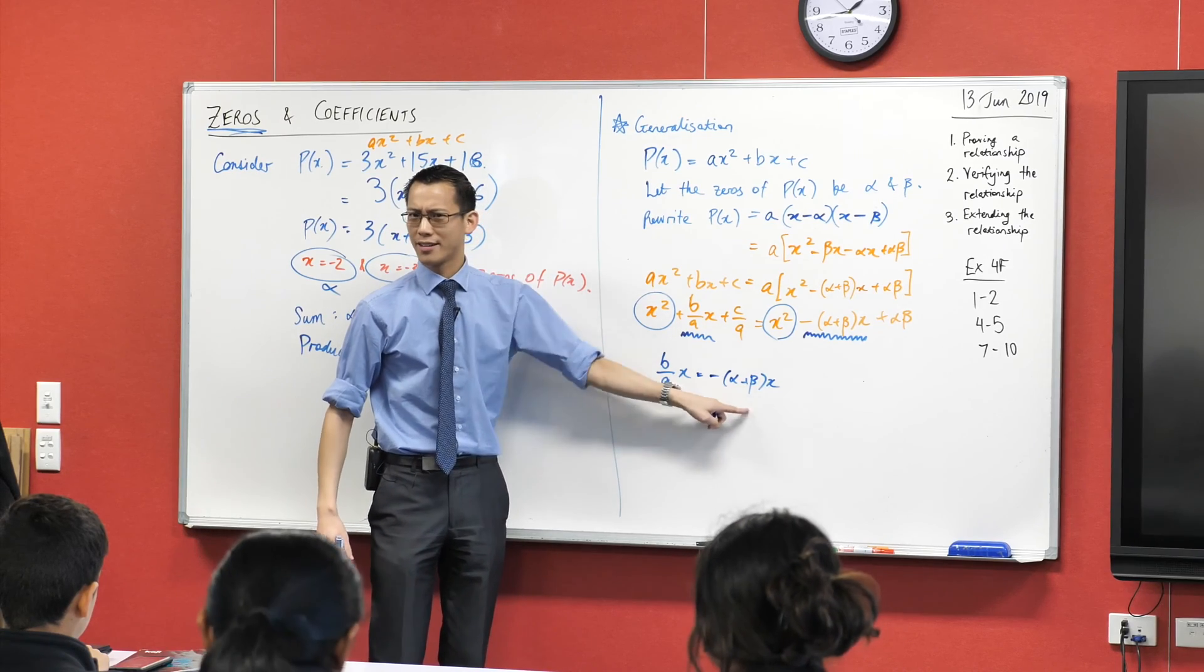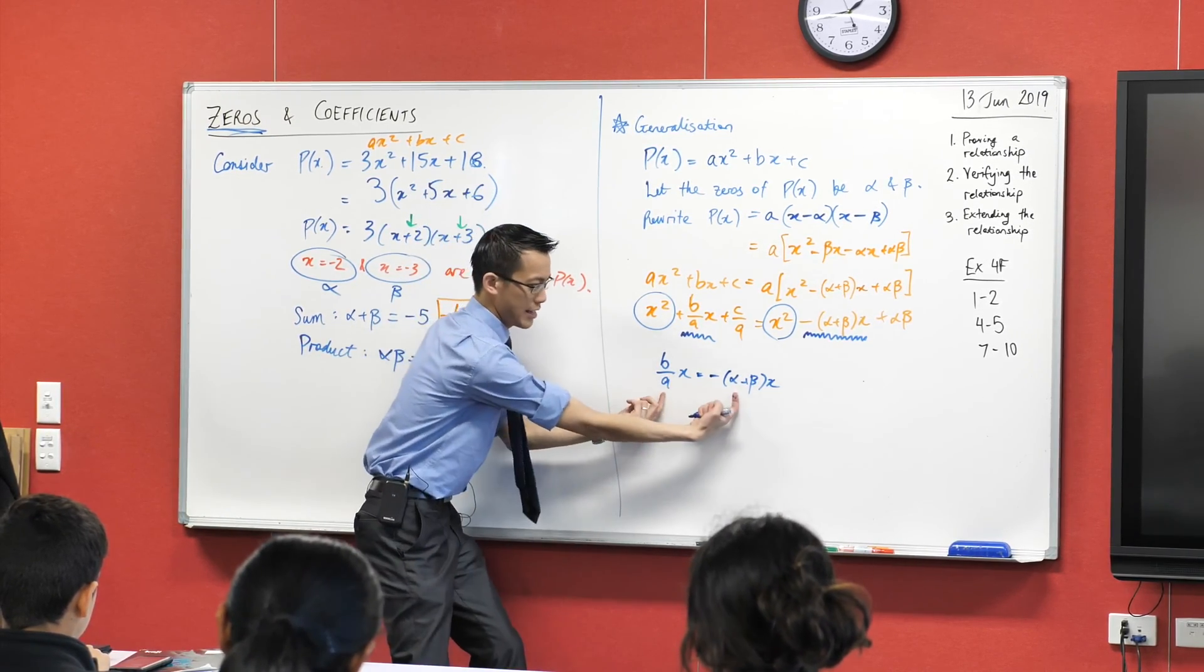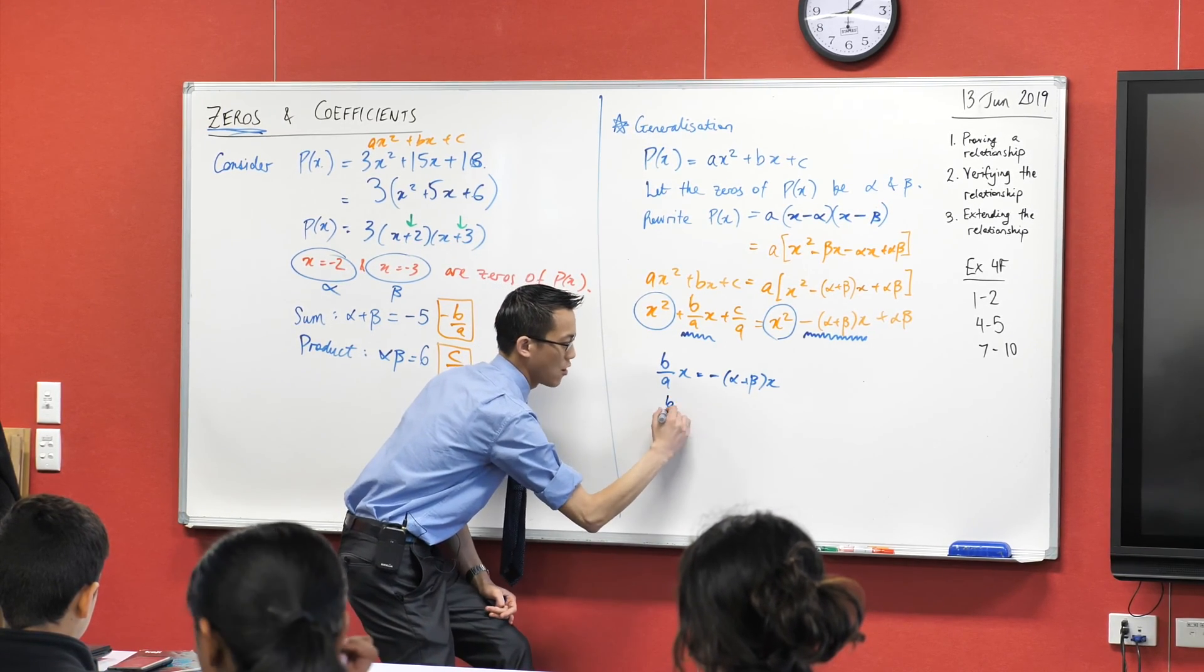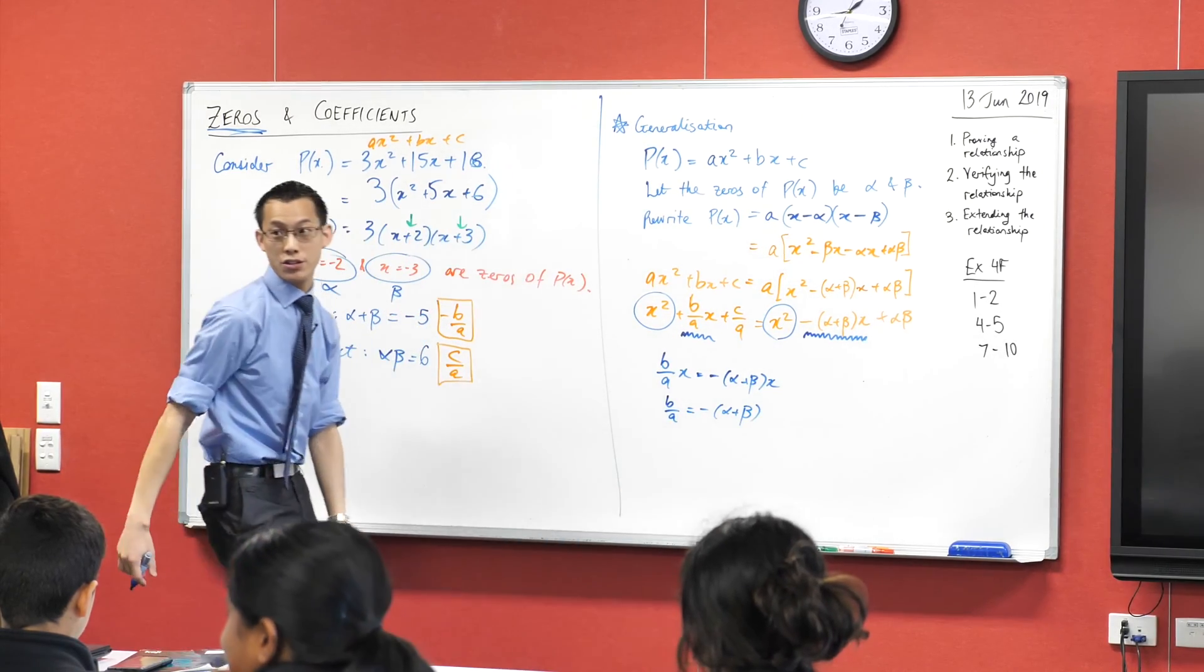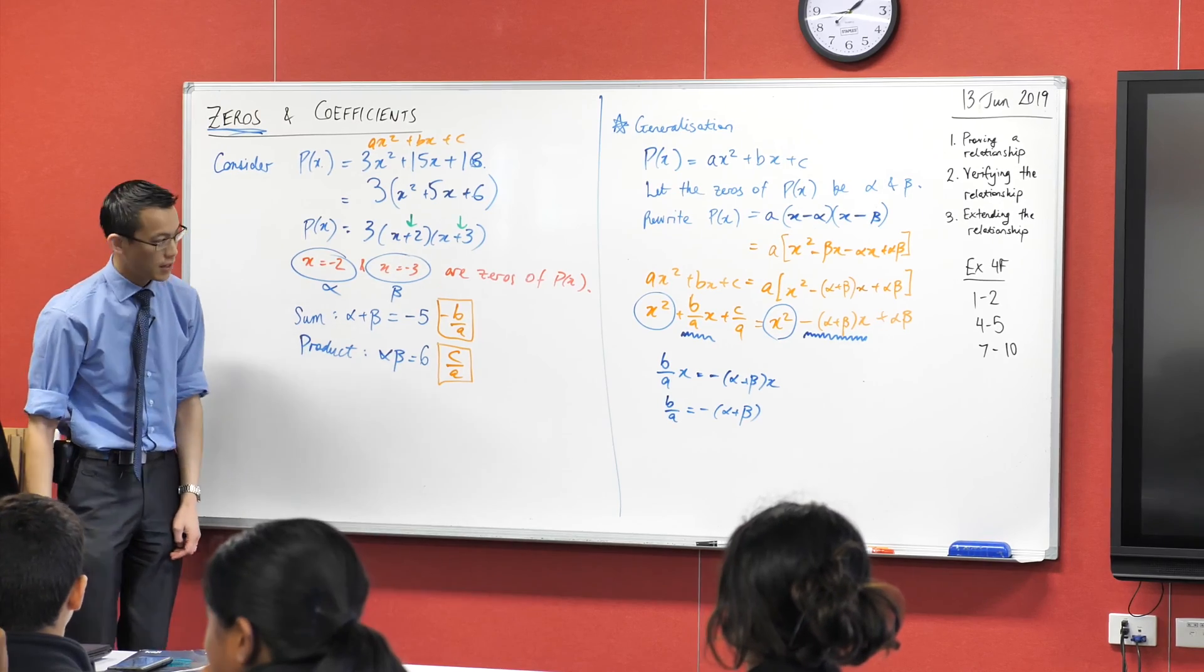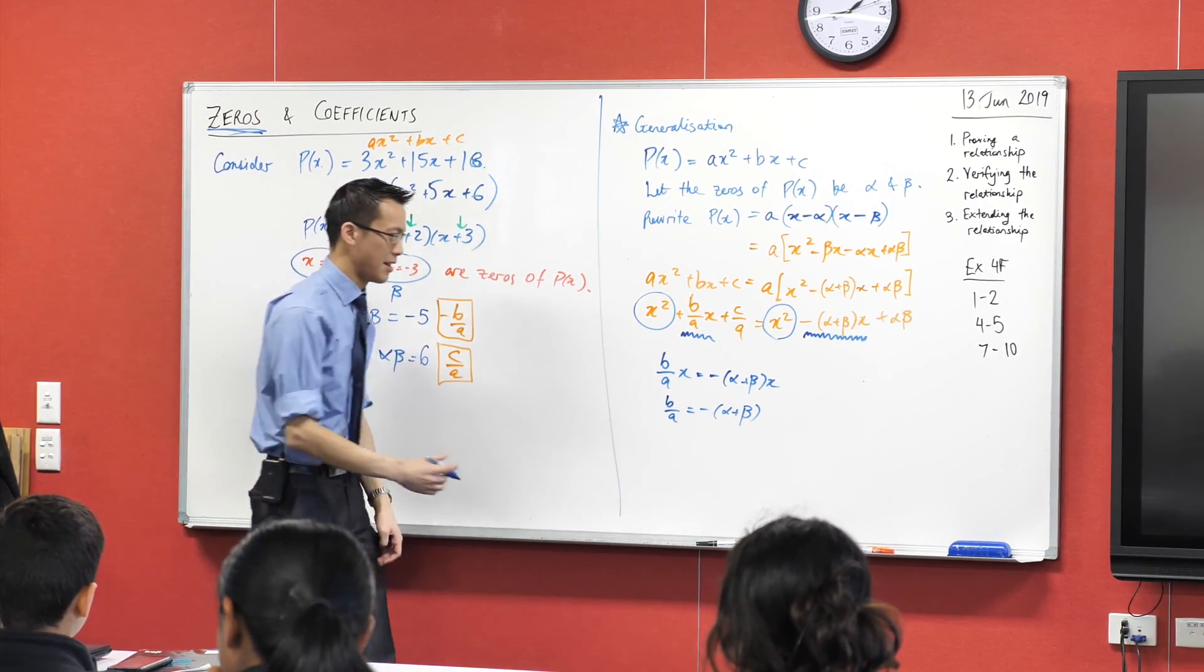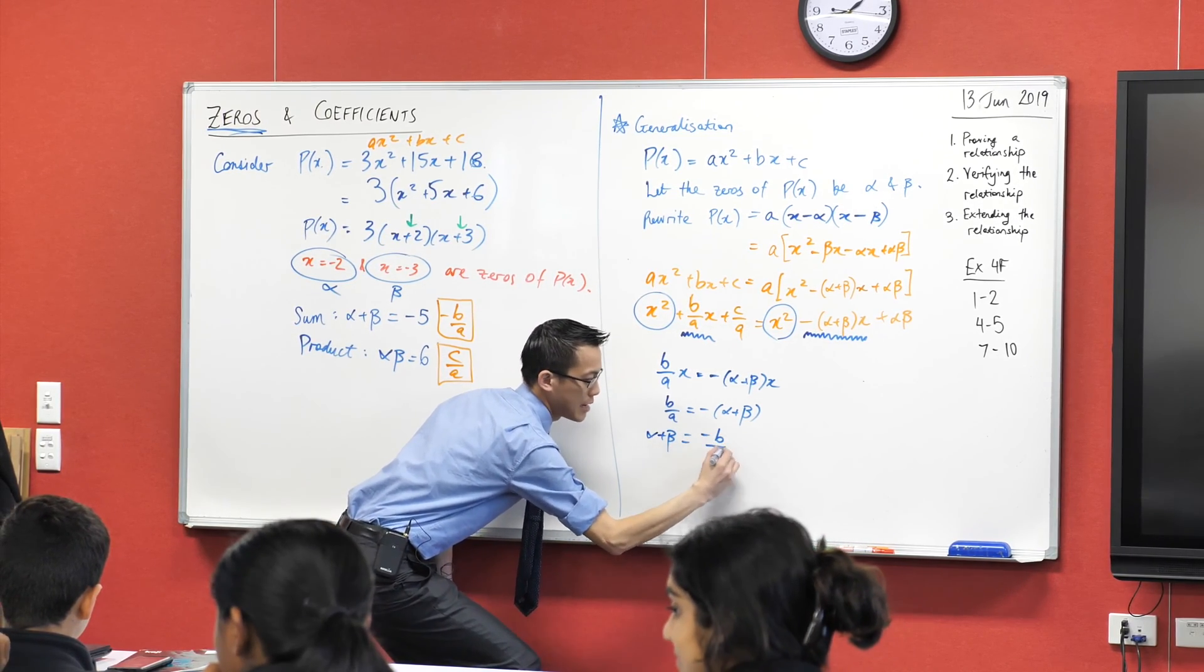We can simplify this a little bit, can't we? I don't need to write the x's there. It's really these two things that are really interesting, right? So I'm going to write b on a equals this. What's the last step I should do to get to my actual result that I wanted? Divide through by negative one. I should divide through by negative one, or multiply through by negative one. Same effect, isn't it, right? So I'm going to write alpha plus beta equals minus b on a.